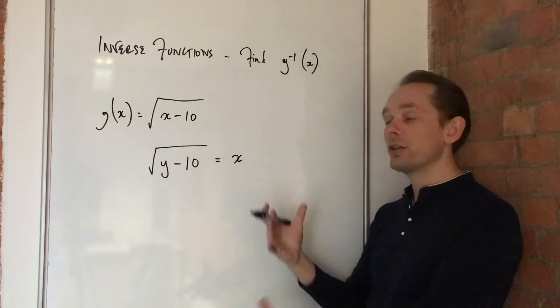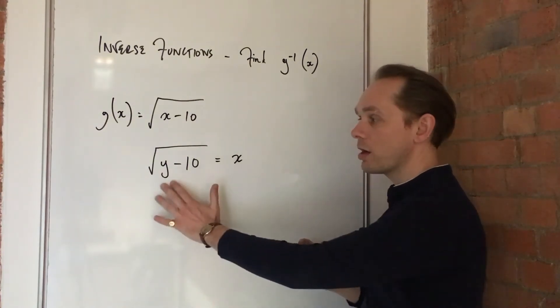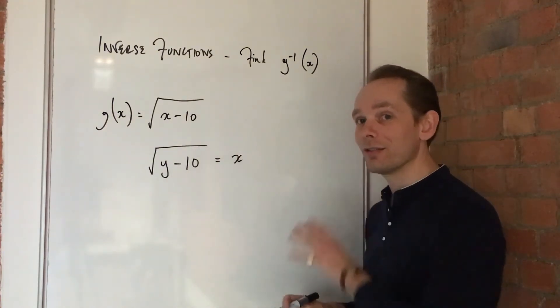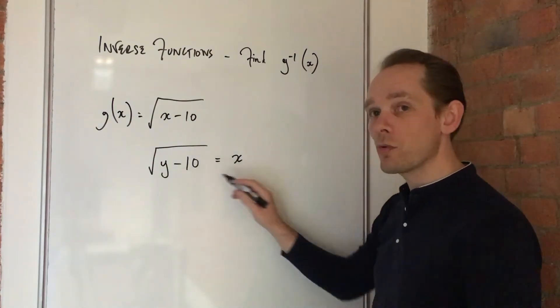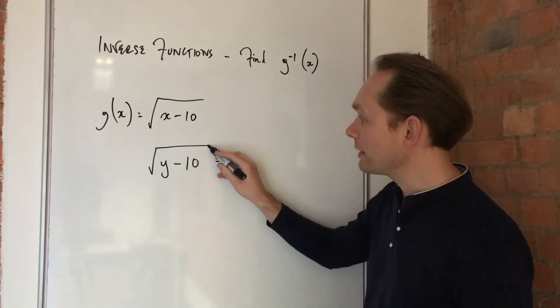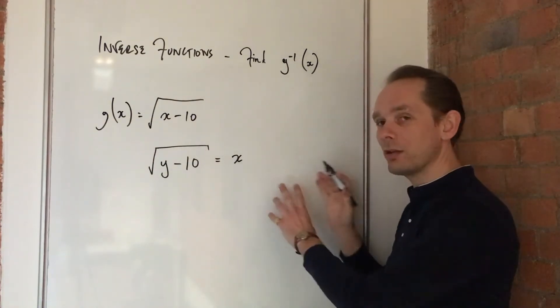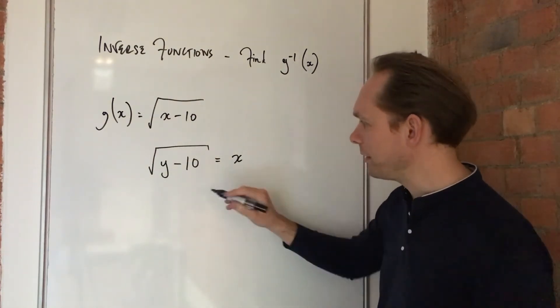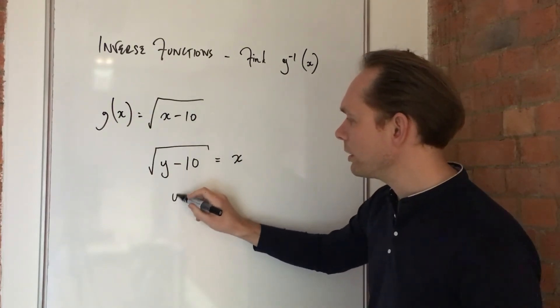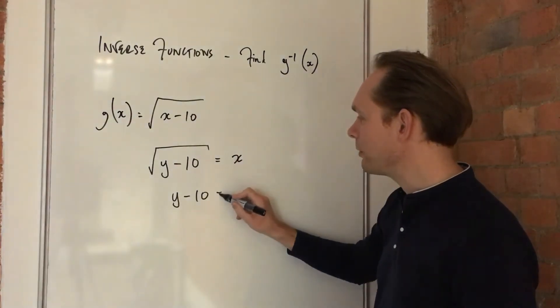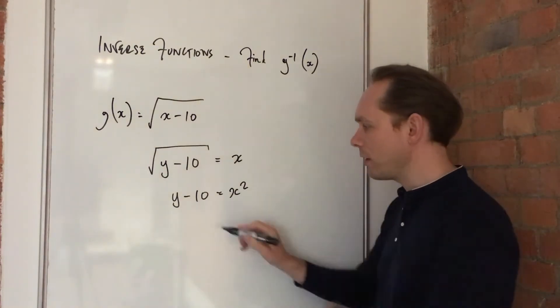And then you're going to rearrange to make y the subject. And then you'll find you've answered the question. So we're going to square both sides. Only ever do that if you've got a square root completely covering. You only have one term. If you have multiple terms, squaring it gets messy. So just be careful. But this will work. y minus 10 equals x squared. And then move the 10 over.